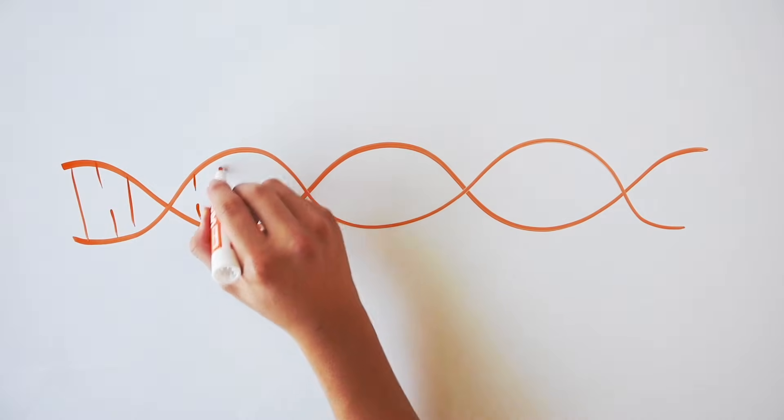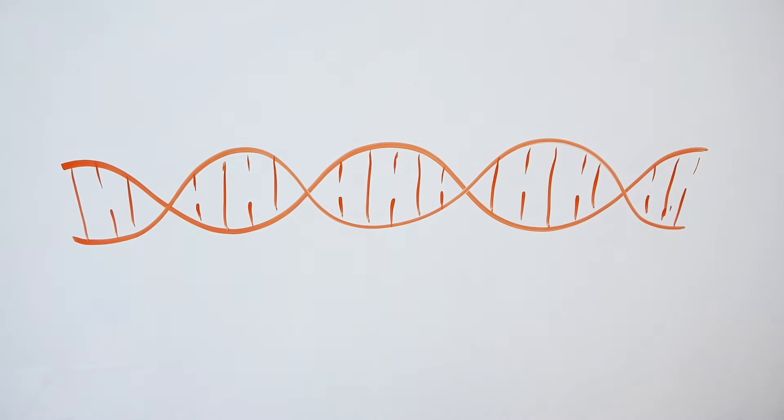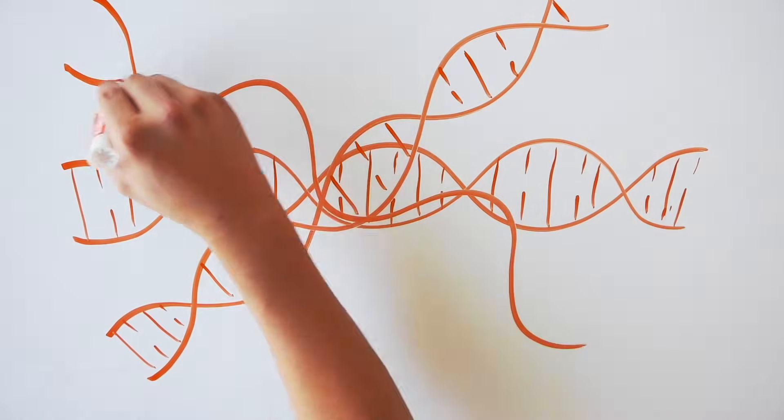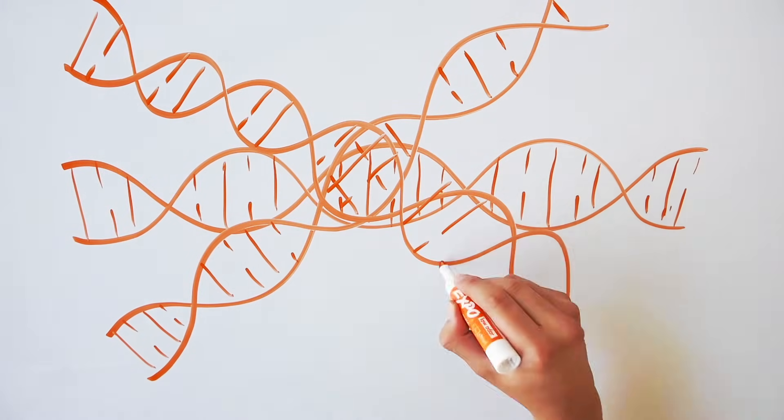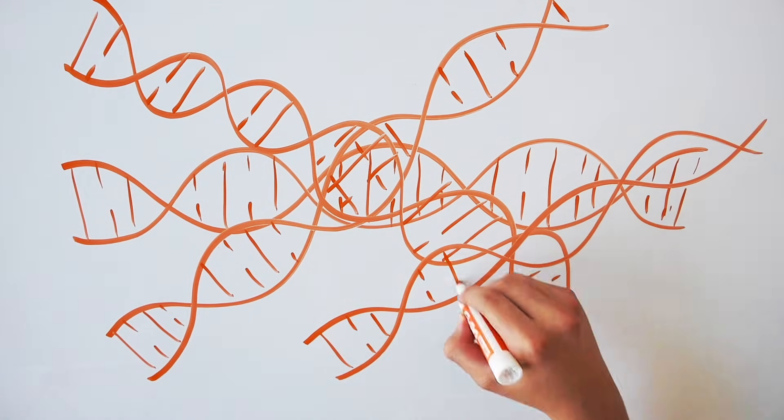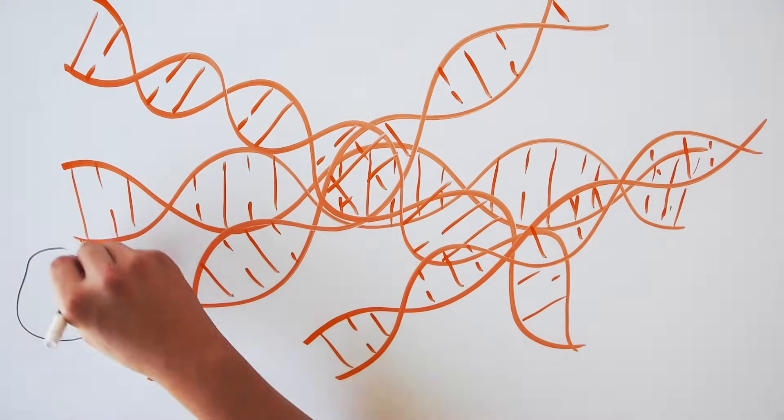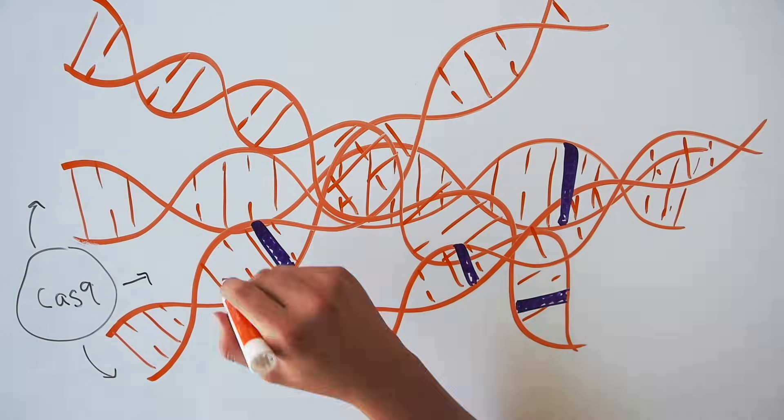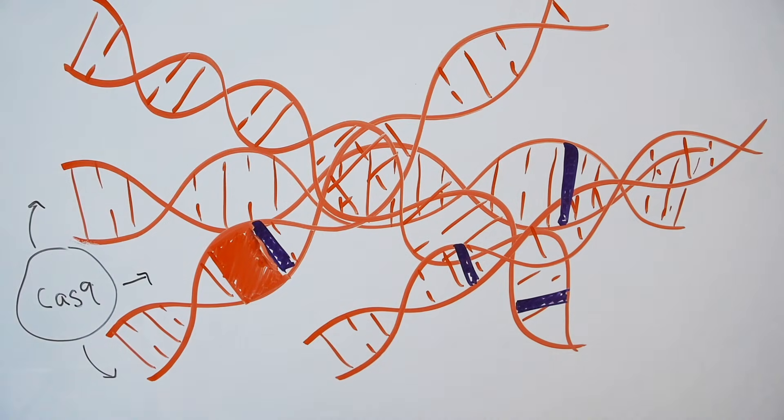The PAM sequence also serves an additional role. Searching through all the DNA inside a bacterial cell can take a very long time, but the PAM sequence accelerates the search process. Instead of trying to unwind every bit of DNA to check for a match, Cas9 bounces around the cell searching for a tiny PAM sequence. If it finds one, only then does it check to see if the CRISPR RNA matches.